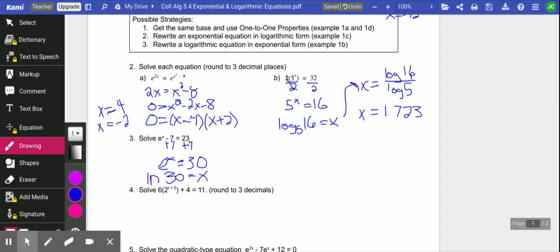So that's just rewriting it. And then when I put that in my calculator, natural log of 30, we'll find that x equals 3.4.